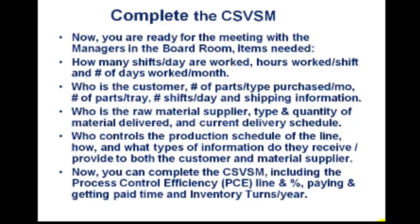You also need to know who controls the production schedule of this line, how they control it, and what types of information they receive from the customer and material supplier. With all this information you can complete the current state value stream map, including the process control efficiency, the line efficiency percentage, and the paying-to-getting-paid timeline. This is crucial: you want to shorten the time between when you have to pay for incoming materials to when the customer pays you for a delivered product — that's the time you're essentially being asked to cut.